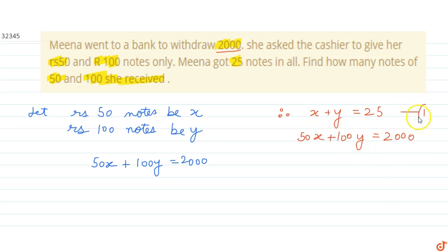From equation 1, we get X equals 25 minus Y. Substituting this value of X in equation 2, we get 50 times (25 minus Y) plus 100Y equals 2000.